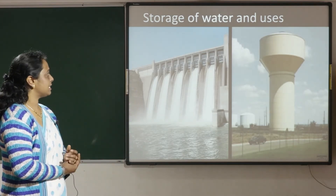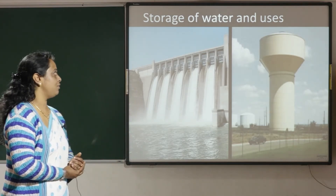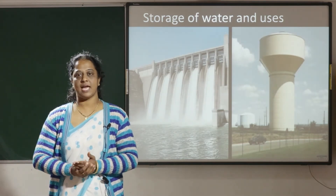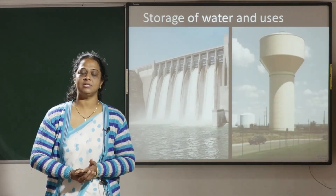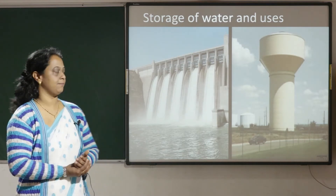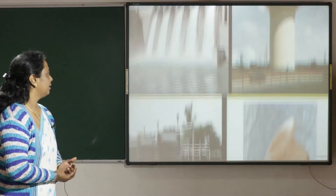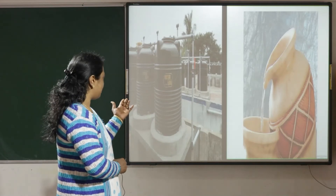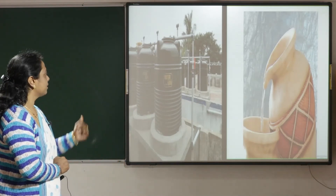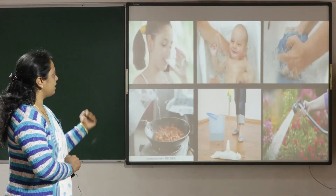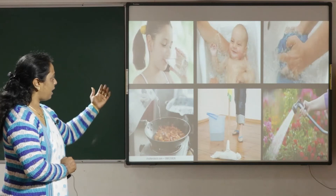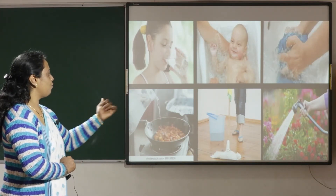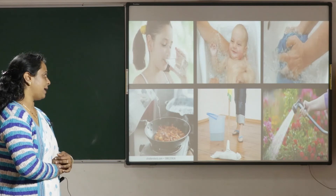Tank: a tank is a container in which we can store large quantities of water, which can be used for agriculture, irrigation, and drinking. The water tanks used at home are used for drinking, bathing, washing, cooking, cleaning, and watering the plants.